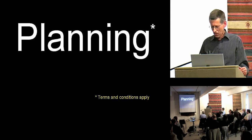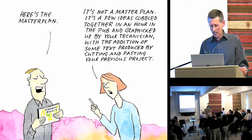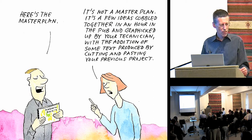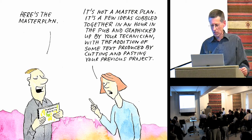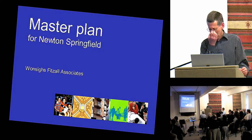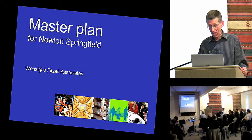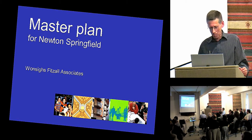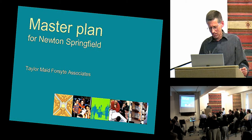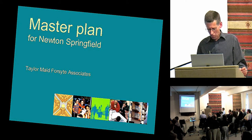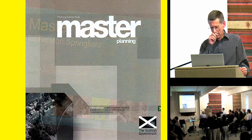Here's the small print: planning — terms and conditions apply. So we're trying to plan for changing conditions, which means that the master plan has got to somehow be tailored for the particular purpose, rather than just a cut-and-paste job. But they all look the same — not only in the layout of the design, but actually in the documents. This is from One Size Fits All Associates, and it looks very similar to this one by Taylor Made Forsyte Associates. It takes a while to work out which one is actually going to add value to what we're trying to do.